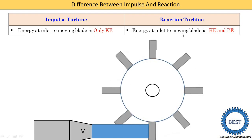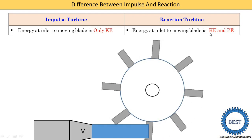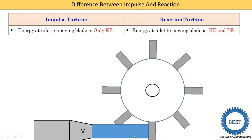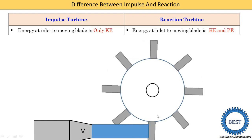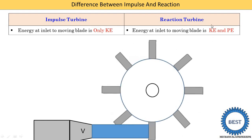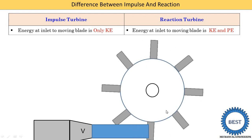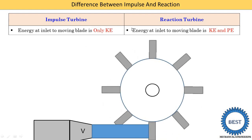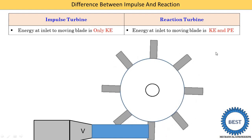When we talk about the reaction turbine, the energy at the inlet of the moving blade is kinetic as well as pressure energy. That means the water supplied has both energies: kinetic energy (KE) and pressure energy (PE). When the water strikes the blade, it is known as the reaction turbine. The simple logic is: only kinetic energy means impulse turbine, and in a reaction turbine water has two energies — kinetic as well as pressure energy.